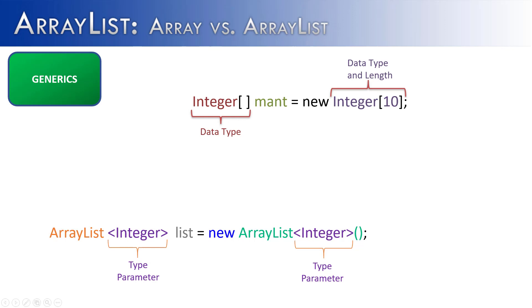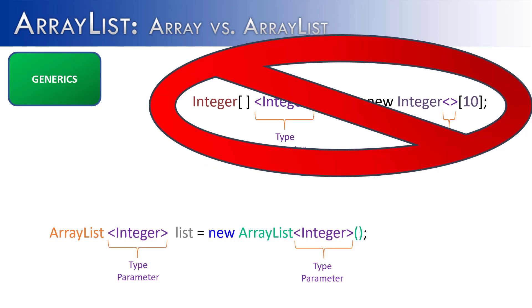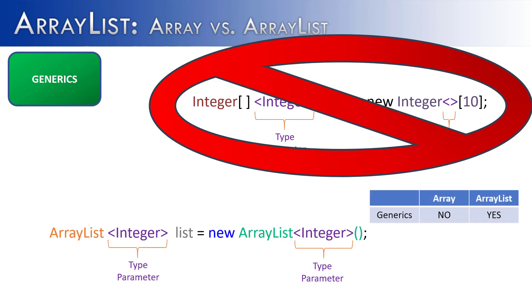Now let's talk about generics. Generics is the means by which array lists are able to specify the type of data that's going to go into the array list. We know that array lists can use generics — but what about arrays? If I were to add a type parameter inside of an array, it would not work. So generics only work with array lists: array — no, array list — yes.